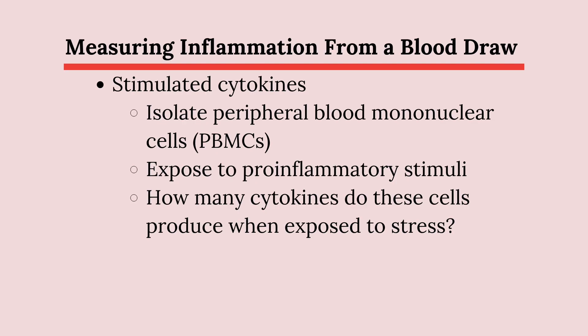Another way we can measure inflammation from a blood draw is to isolate the peripheral blood mononuclear cells — think T-cells and monocytes — and measure how many cytokines they produce when exposed to a toxic pro-inflammatory stimulus of some kind in the lab, and we call these stimulated cytokines. They better represent your immune system's reactivity to stress than just measuring the cytokines that are floating around in your serum.